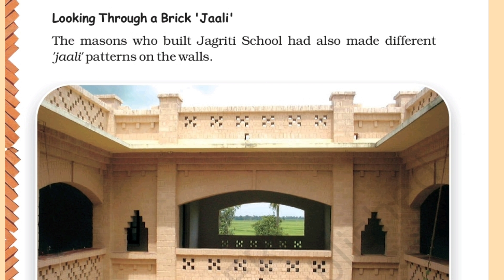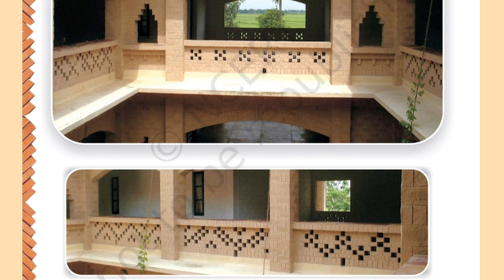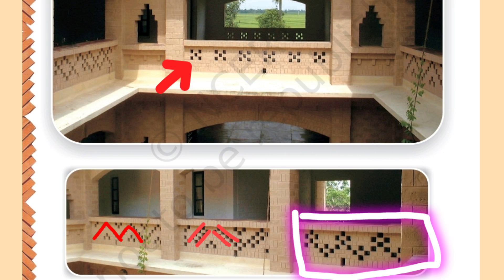Looking through a brick jali — a jali is a design made by the mason using bricks, which you can see through to the outside. The masons who built Jakriti school also made different jali patterns on the walls. Let us count how many different types of jali pattern are shown in this image. There are four different types: the first looks like a butterfly pattern, the second is zigzag, the third has two narrow lines, and the fourth is something quite different but beautiful.